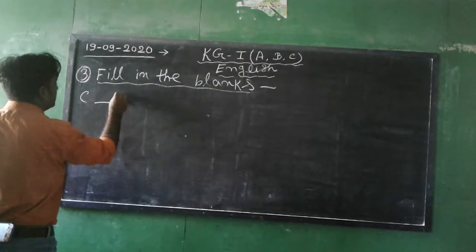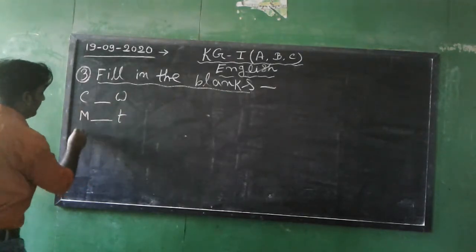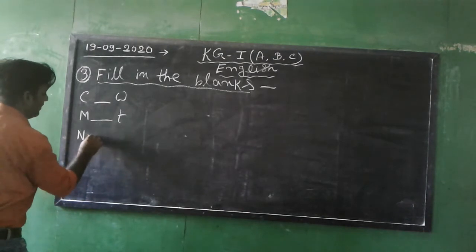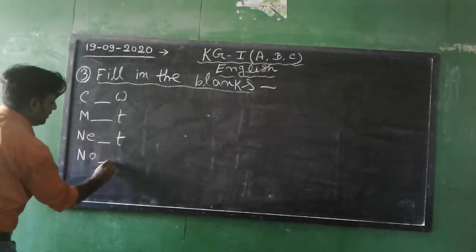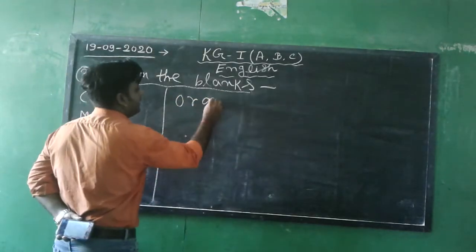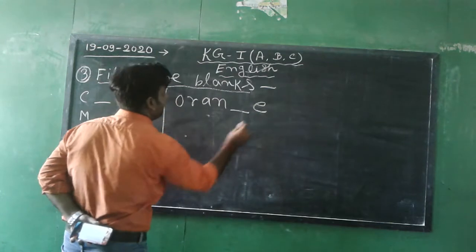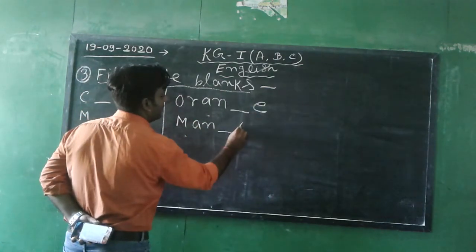Our third topic is fill in the blanks. C blank W, COW. M blank T, MAT. N blank S T, NEST. N blank S E, NOSE. O blank A N G E, ORANGE. M blank N G O, MANGO.